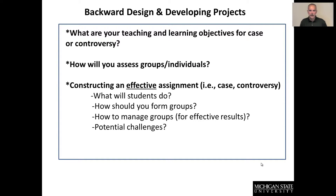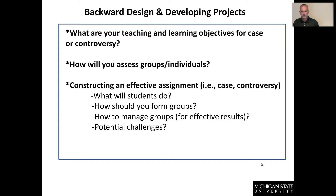If your backward design is all in line — notice all these fit in a nice square box — for your decision case or controversy, these are going to be aligned and you're going to have an effective assignment in terms of knowing what you want students to do, how you're going to form groups associated with your case study or controversy. Managing groups can be a huge issue, especially in large classes of 60, 80, 100 plus, if you're going to use cases or controversies, and then thinking about the challenges.